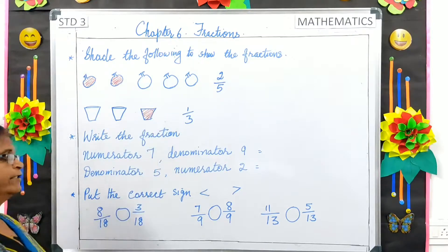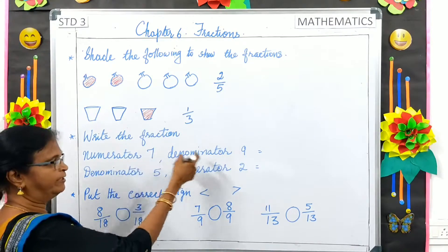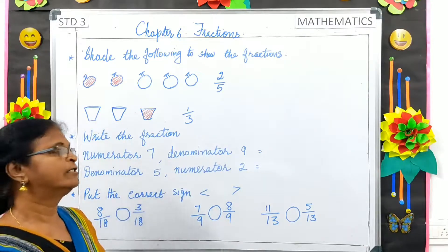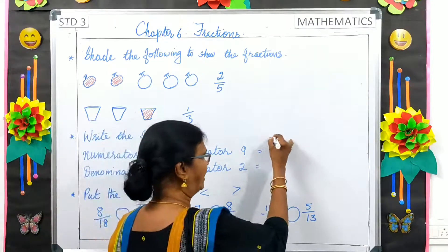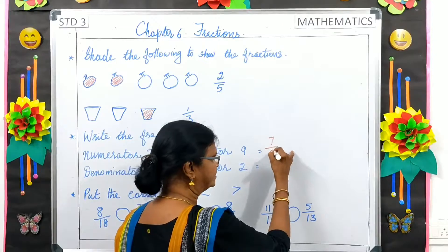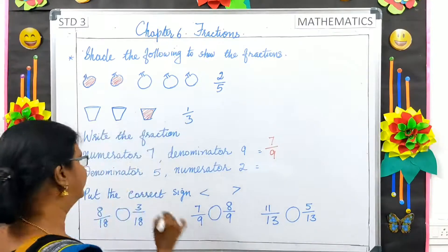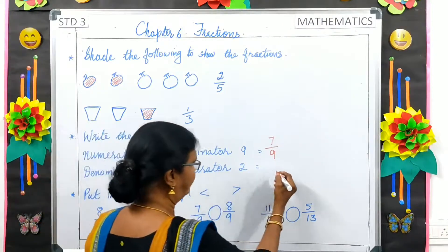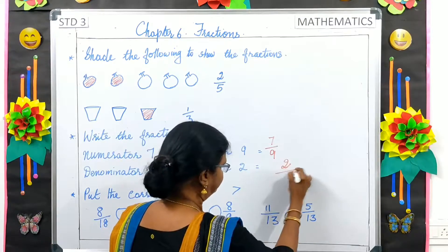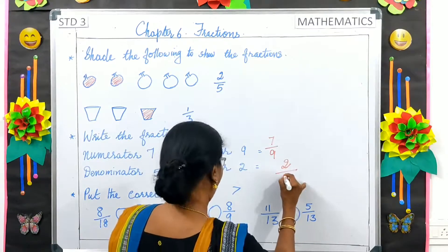Now, write the fraction. Numerator 7, denominator 9. Numerator is above the line. Denominator is below the line. The same way, denominator 5, numerator 2. So that is 2 by 5.